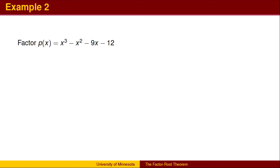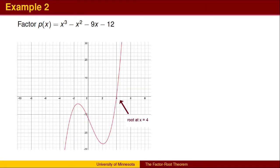This second fact, that roots can help us find factors, can be useful in factoring polynomials. First, we need some way to find a root. One possibility is to use a graphing utility like Desmos. If we graph the polynomial, we can look for the x-intercepts. In this case, the graph crosses the x-axis at x equals 4, so 4 is a root, and x minus 4 is a factor.